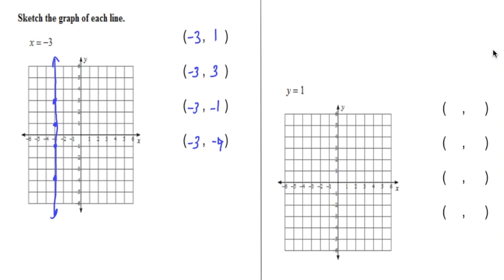Now let's graph the line y equals one. Before, when we graphed x equals negative three, all the x-values were negative three. This time all of our y-values are going to be one. I'll pick random values for x — say -2, 3, 0, and 1. So the points are (-2, 1), (3, 1), (0, 1), and (1, 1). We connect them into a straight line and add arrows on both sides because it goes on forever. There's the line y equals one.